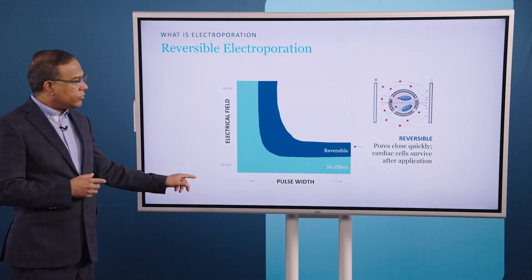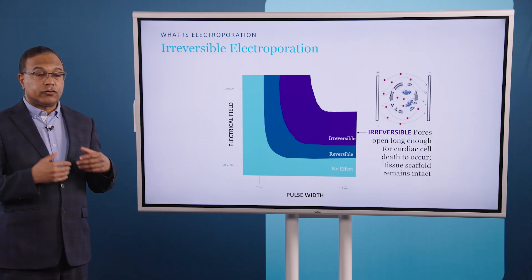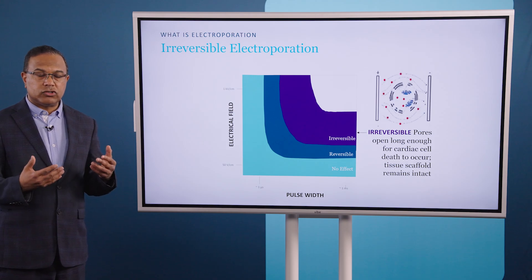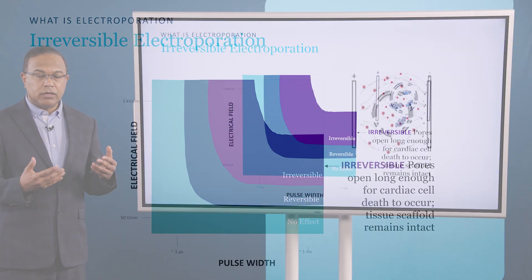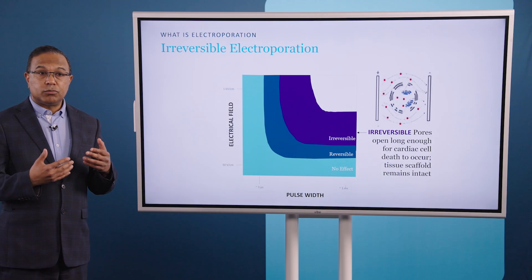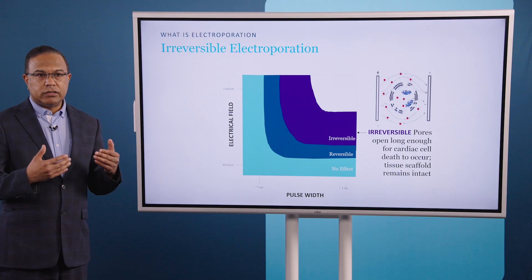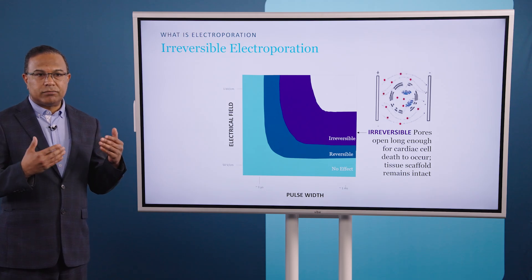On the other hand, if we start to further increase the magnitude of the field and the duration over which it's applied, we start to get irreversible electroporation, and that's really what we want for ablation. Because here, the cellular pores will open, they will stay open, and then eventually the cells will end up with programmed cell death.